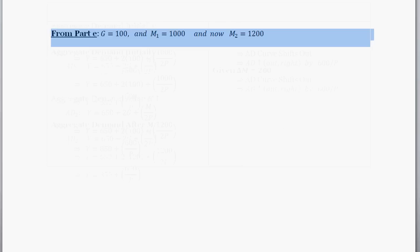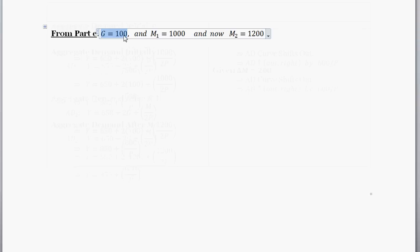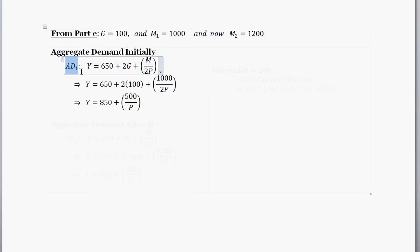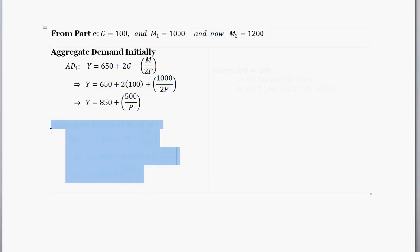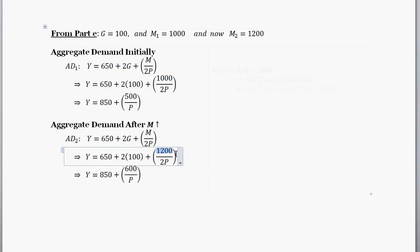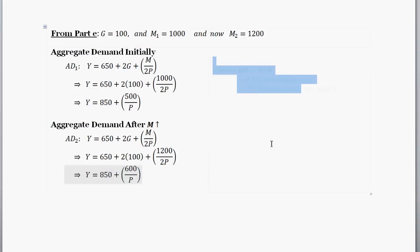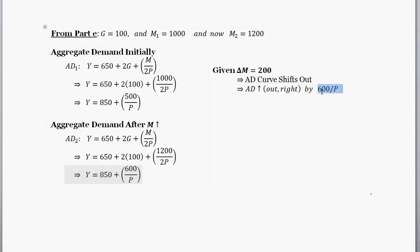The next part asks us to consider part E. In part E, government spending was constant at 100 — no shock there. But we were asked to compare when the money supply was 1000 to when it's 1200. Our initial aggregate demand curve AD1 works out to Y equals 850 plus 500 divided by P, with government spending of 100 and money supply of 1000. When we increase the money supply to 1200, we get a new aggregate demand equation: Y equals 850 plus 600 divided by P. So the AD curve is once again going to shift out to the right, and it shifts out by 600 divided by P.